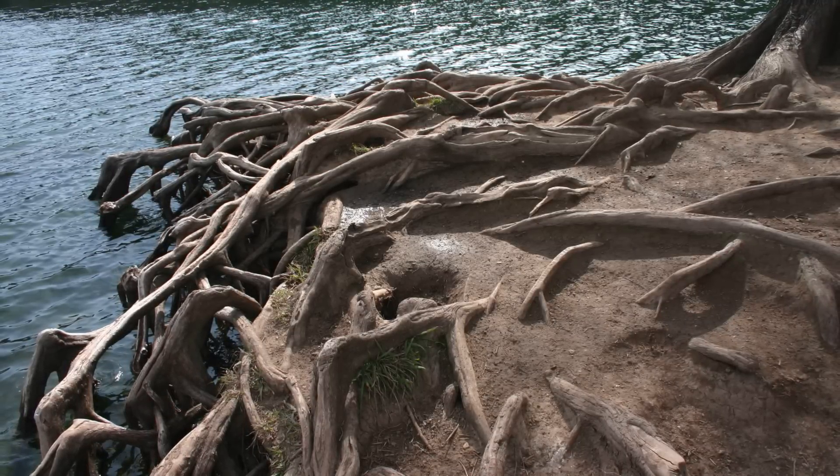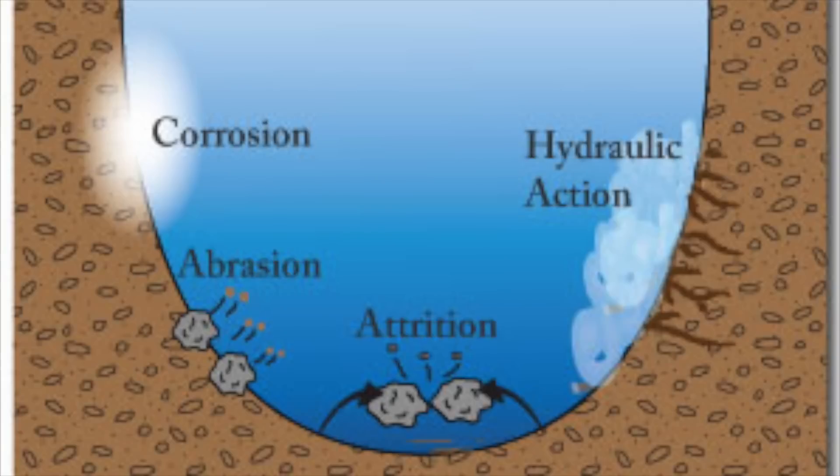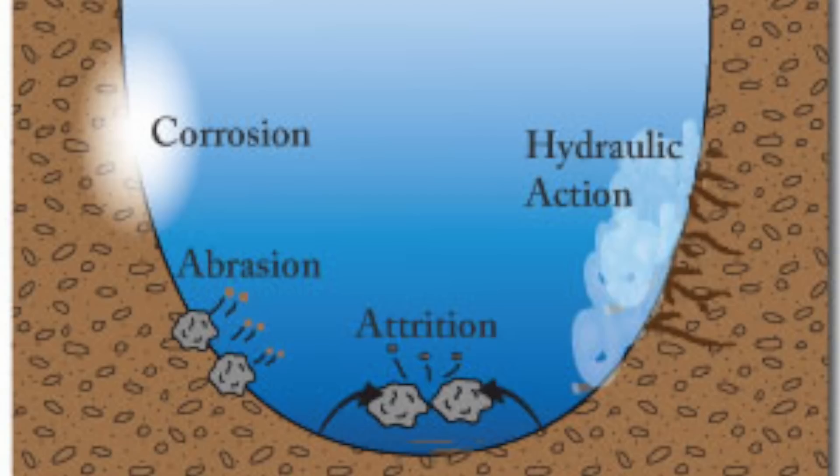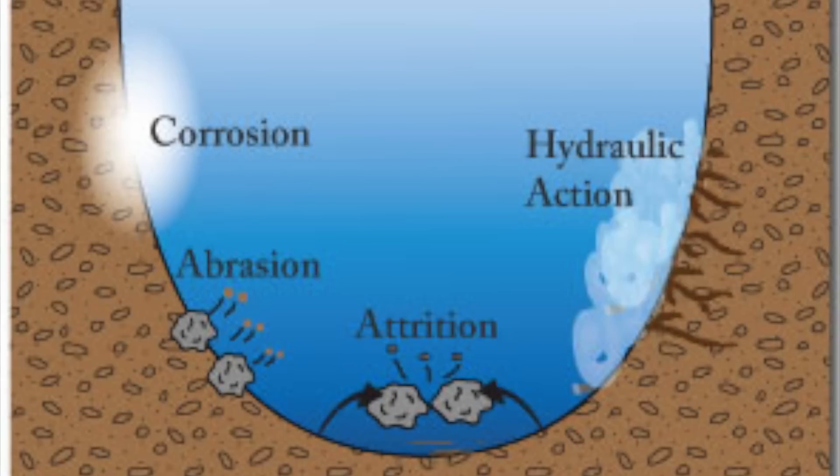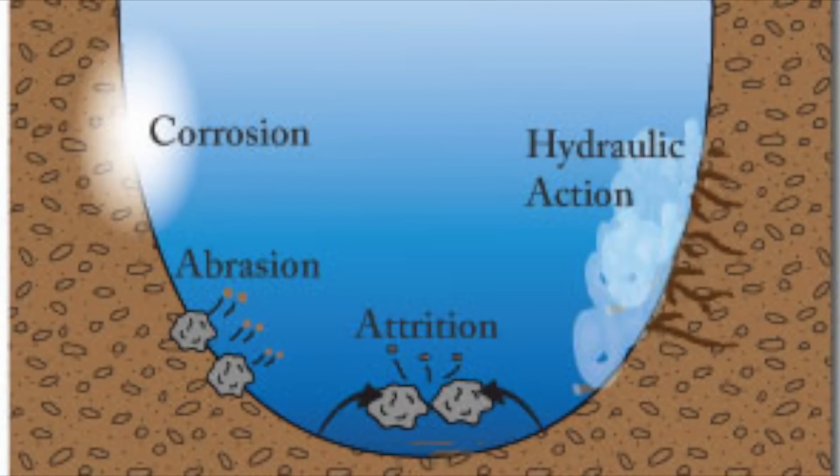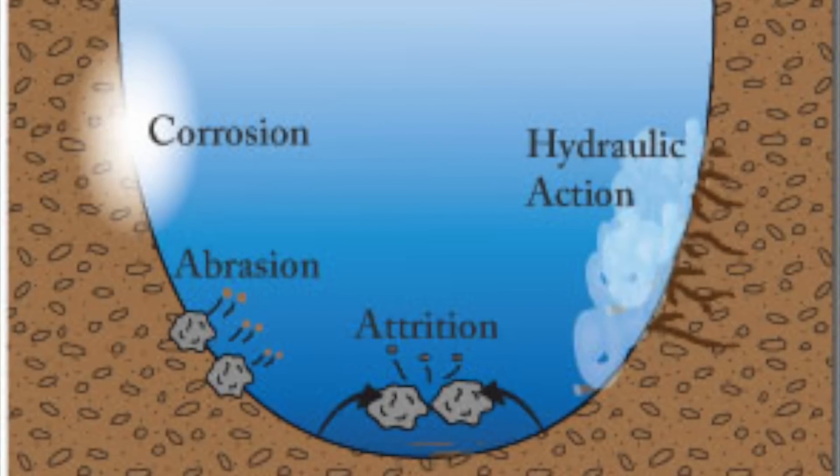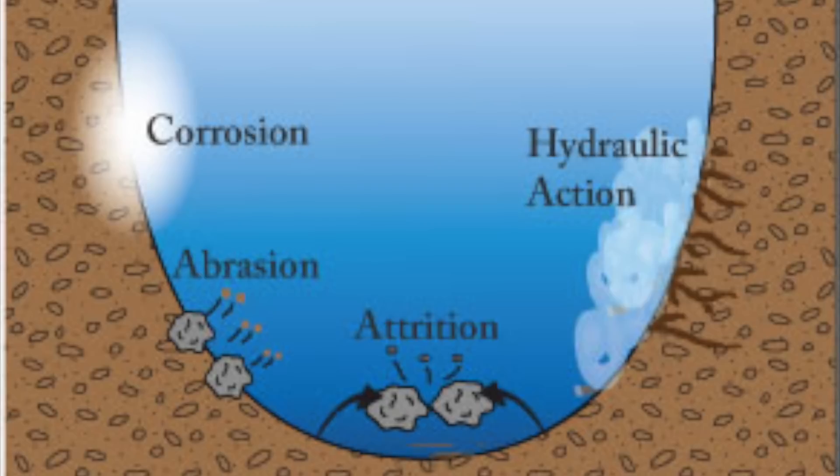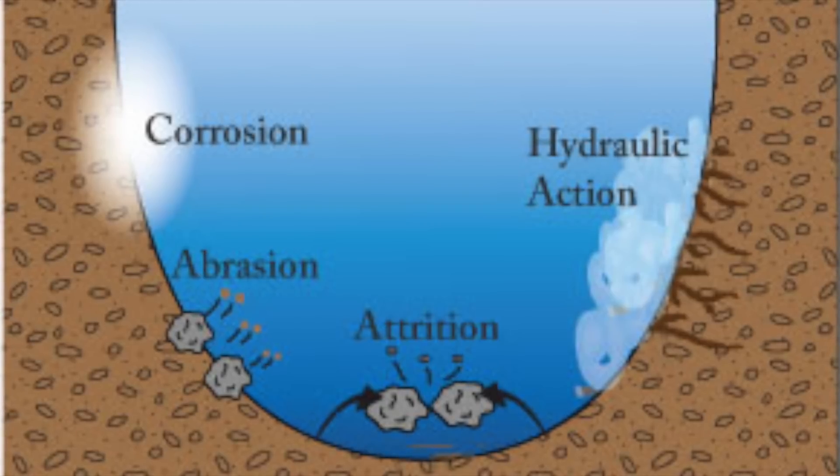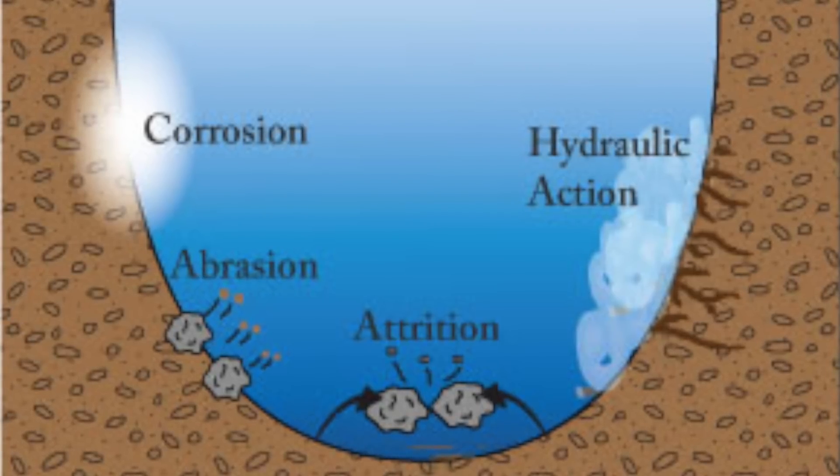There are four different types of erosion. You can have abrasion, also known as corrasion. Abrasion is when fragments of rocks carried by a river wear away the bed and banks of the river. Basically, you can imagine stones being chucked against the side of a bank, wearing it away. That's what abrasion is.